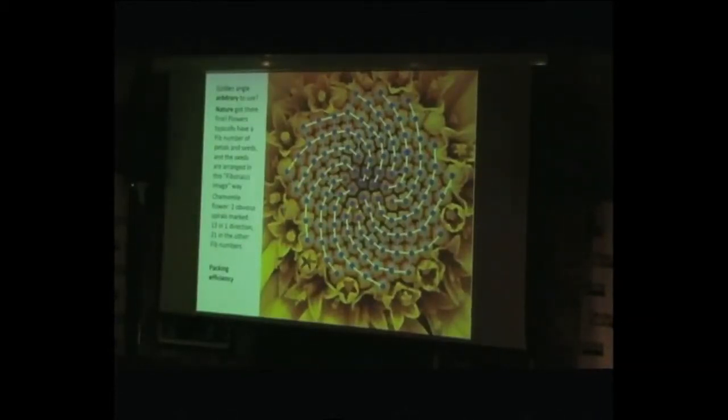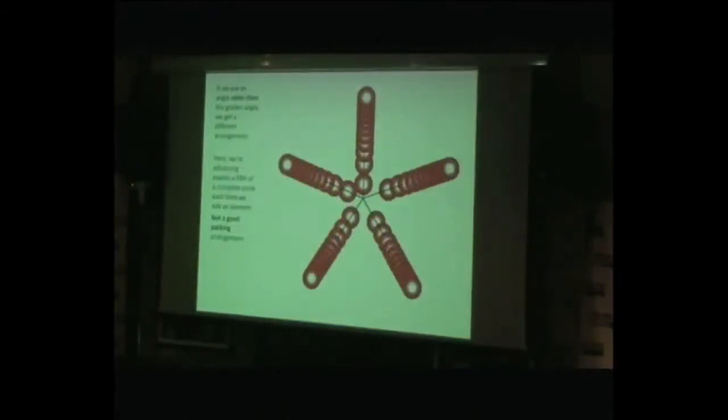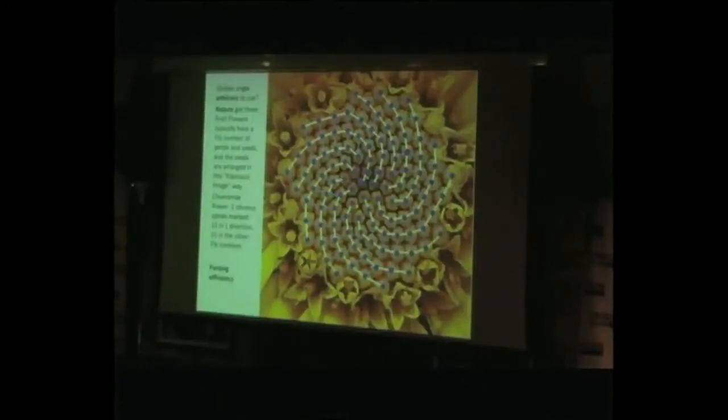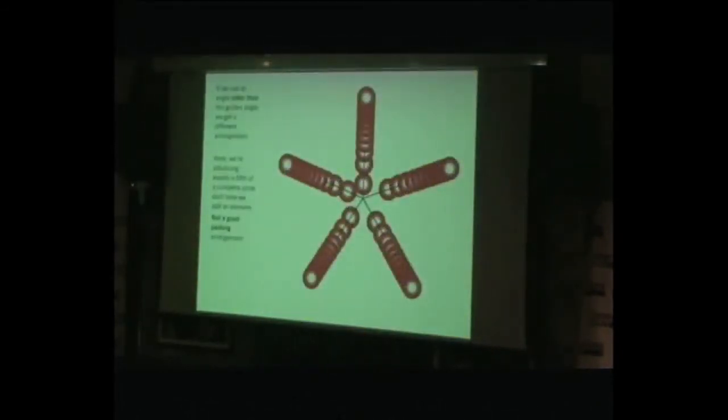But if we used another angle other than the golden angle, we'd get some different arrangement. Here, we've used exactly a fifth of a complete circle to advance each time. Obviously, it's not a very good arrangement for packing. One thing I should have said is that each element, each flower, occupies more or less the same, pretty much the same area, which is very helpful evolutionarily from the point of view of material and packing of seeds, compared to that which is obviously pretty hopeless because you have very big spaces and seeds would be piled on each other.